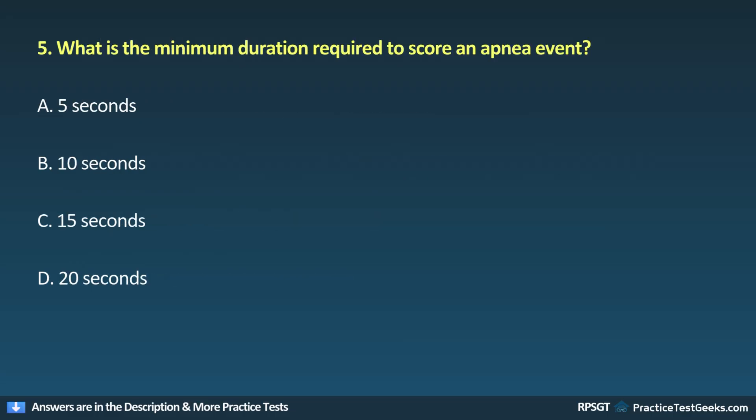Question 5: What is the minimum duration required to score an apnea event? A. 5 seconds, B. 10 seconds, C. 15 seconds, D. 20 seconds.